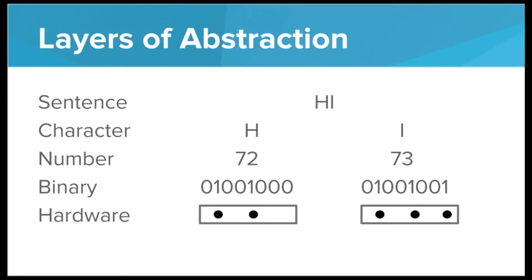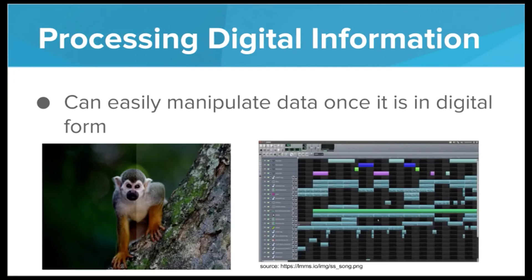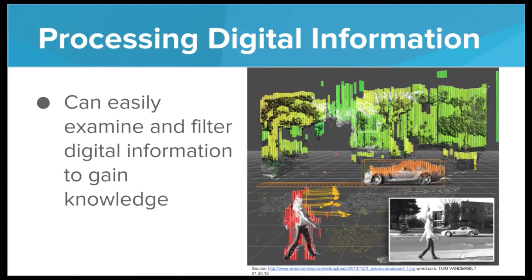So why is it important to be able to represent information digitally? Well, once information is in digital form, we can do a lot of cool things with it. We can easily manipulate data just by tweaking those numbers. For example, we can add a filter to an image to make it darker or brighter, or we can remix a song by manipulating certain parts of the data stream that makes up the song.